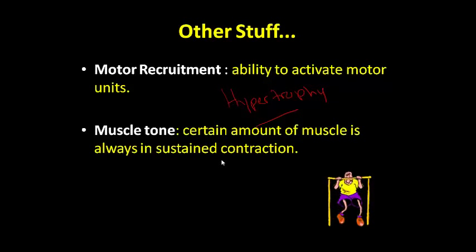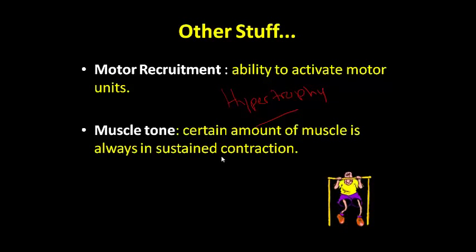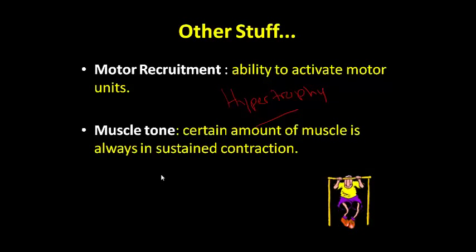Muscle tone: there's a certain amount of muscle in your body that is always in a sustained contraction. As you're sitting at your desk watching this, muscles like those in your neck and face have muscle tone — there are always some motor units firing to keep those muscles in constant contraction. If you lose that ability, like someone who has a stroke on the right side of their brain, the left side of their face will lose that muscle tone because those motor neurons aren't firing and the muscle fibers relax. The muscles that work a lot — like those in your neck, lower back, and face — are where we tend to carry the most tension and become fatigued. Make sure you review this and do the concept map on muscle contraction, and we'll review it in class.